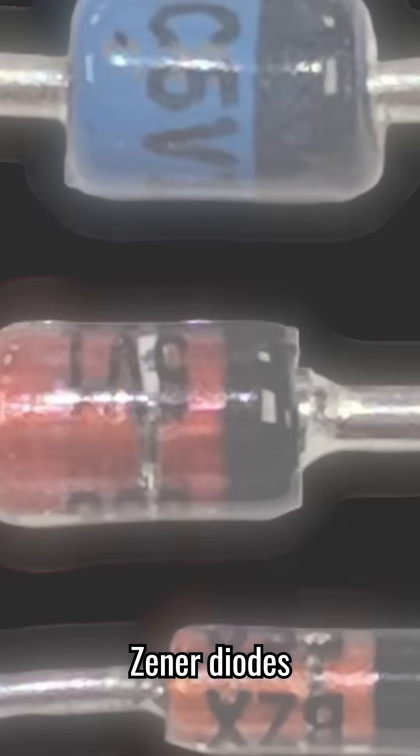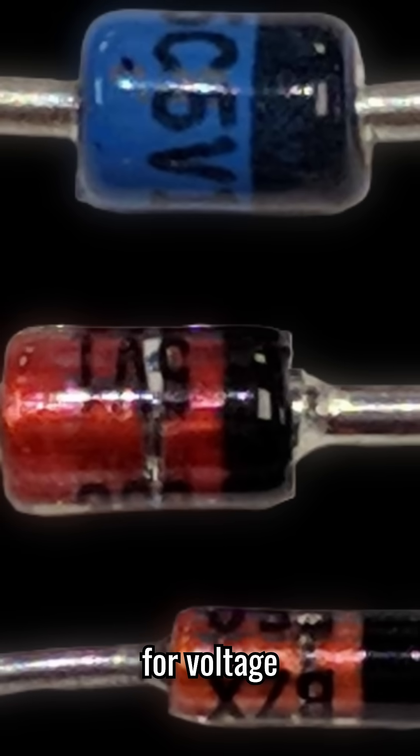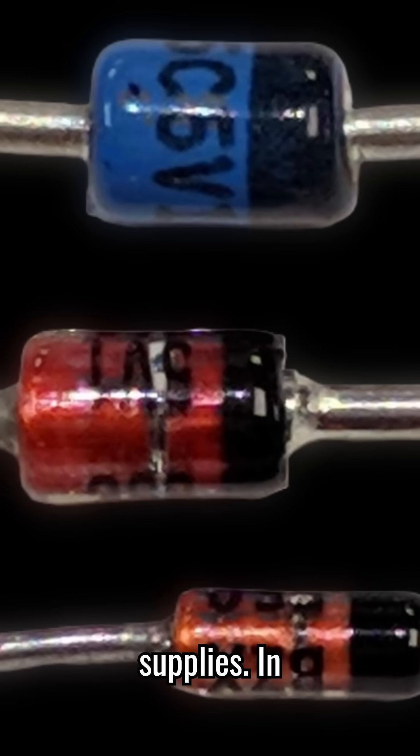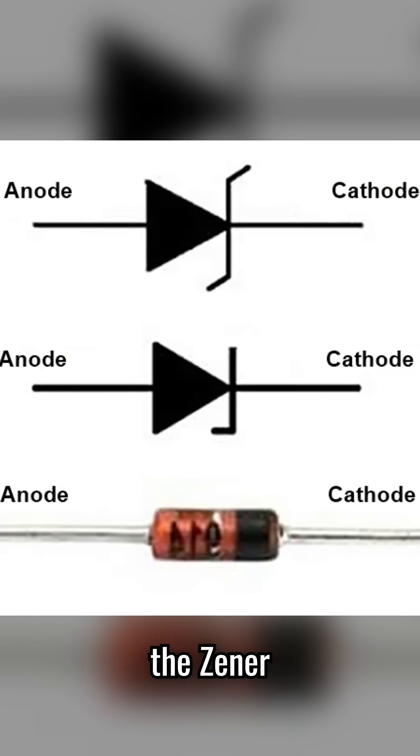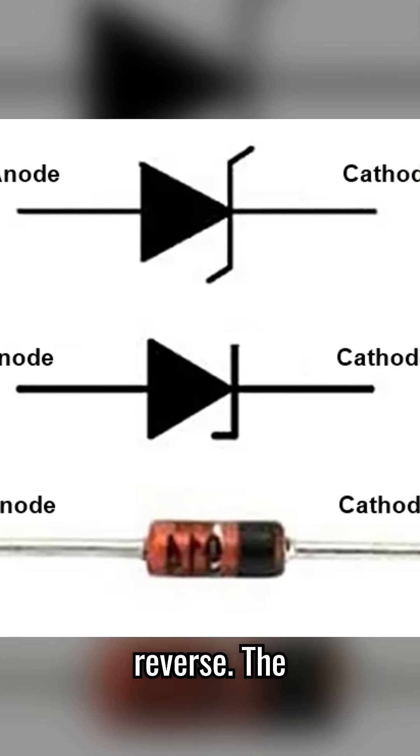Special diode types like zener diodes are invaluable for voltage regulation in power supplies. In reverse bias, when the voltage exceeds a certain value, the zener diodes allow current to flow in reverse.